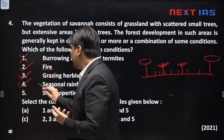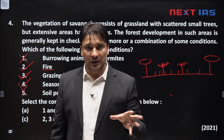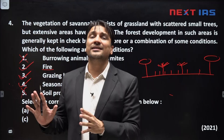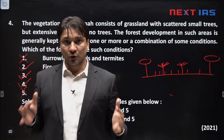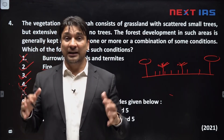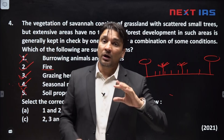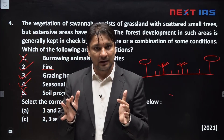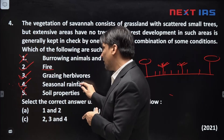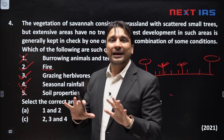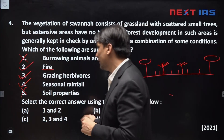The fourth factor is seasonal rainfall — that is also true. Tree vegetation is found in wet areas where rainfall or soil moisture is sufficient to support tree growth. In the savannah biome the rainy season is very short, so moisture availability in the soil, especially in the dry season, is not sufficient to support tree species. The fifth factor is soil properties — this is incorrect. In any grassland biome, whether temperate grassland like prairie, pampas, or steppe, or tropical grassland like savannah, the soil is fertile with a good amount of humus. So you cannot blame the soil for limited tree growth; the climatic conditions are not favorable.